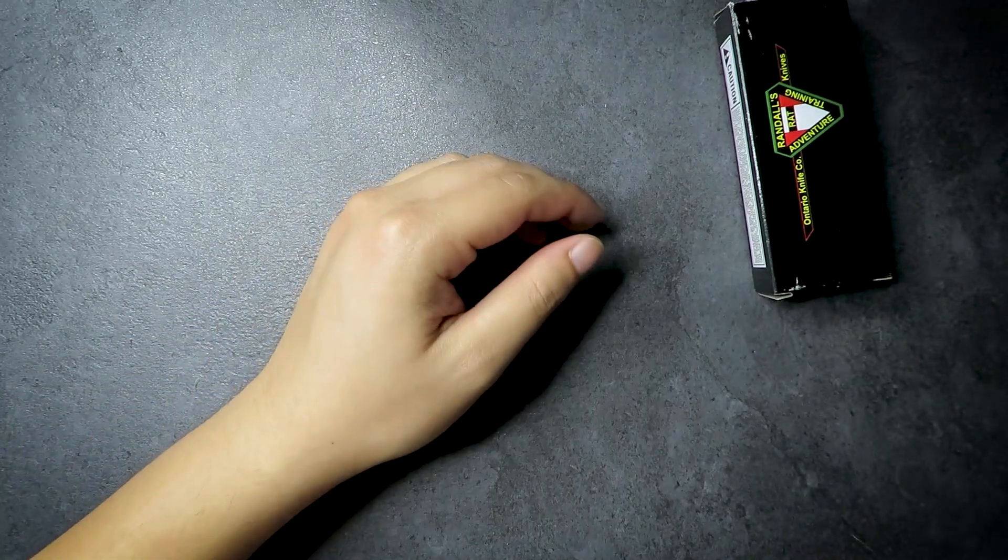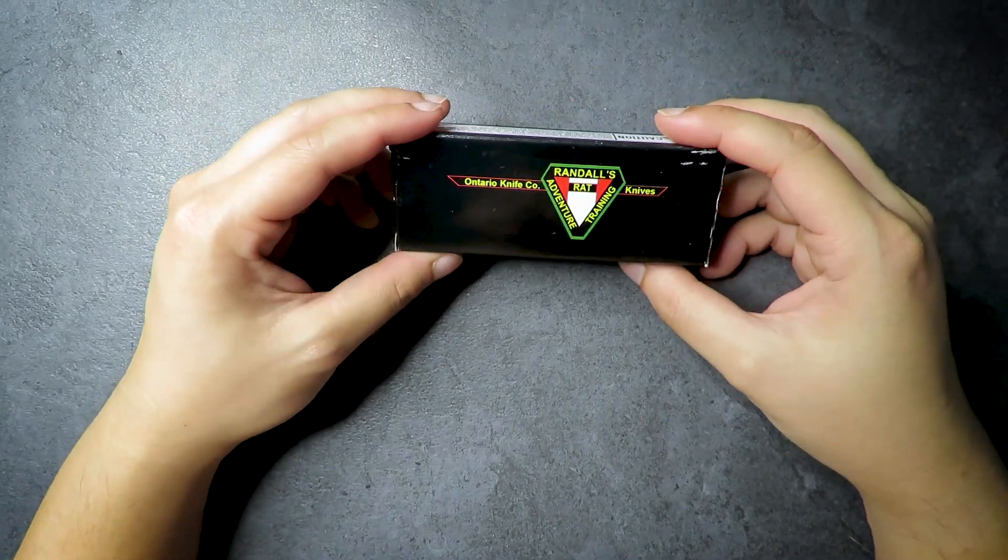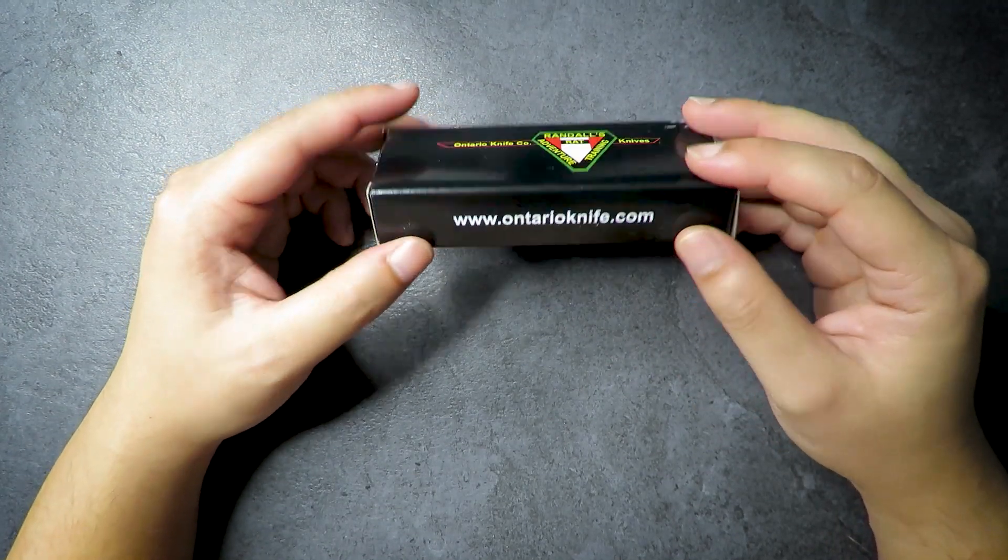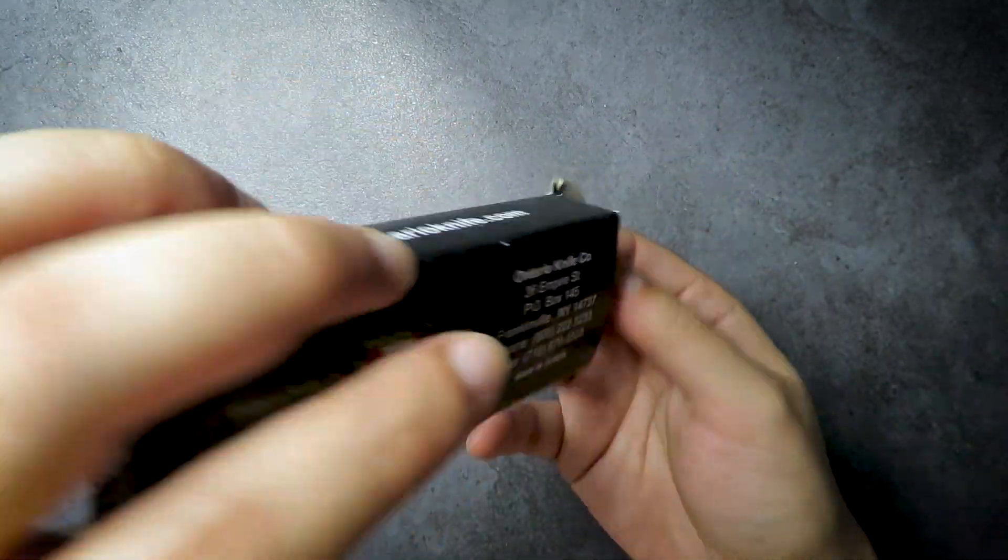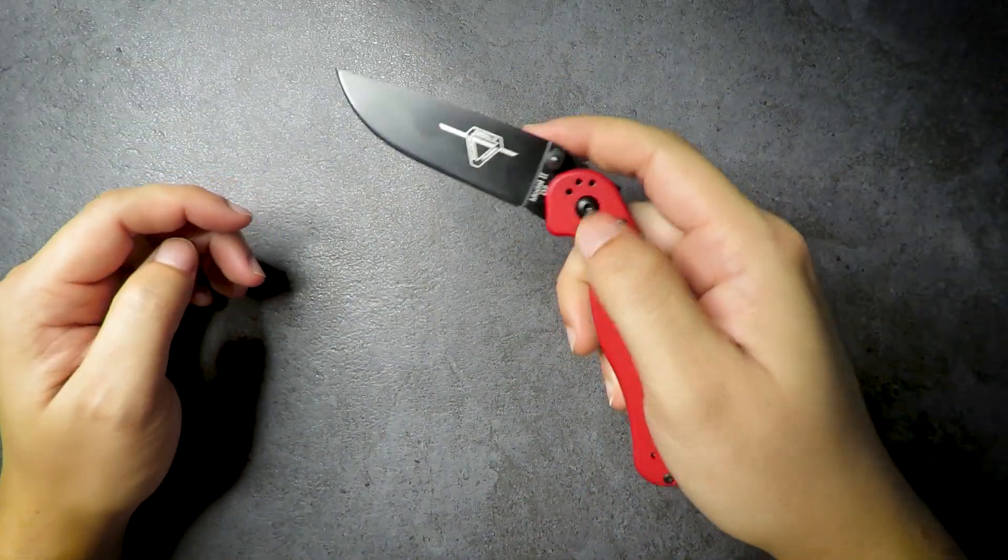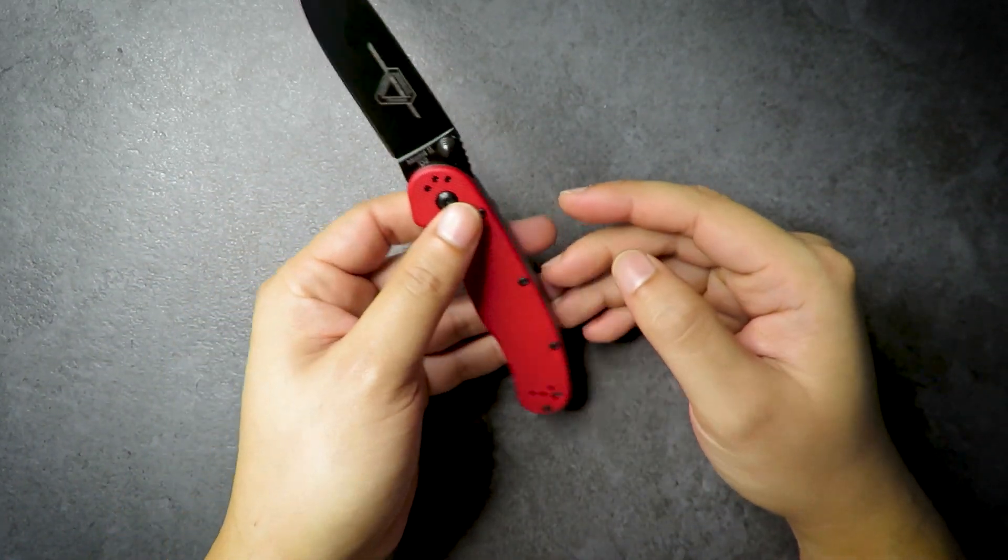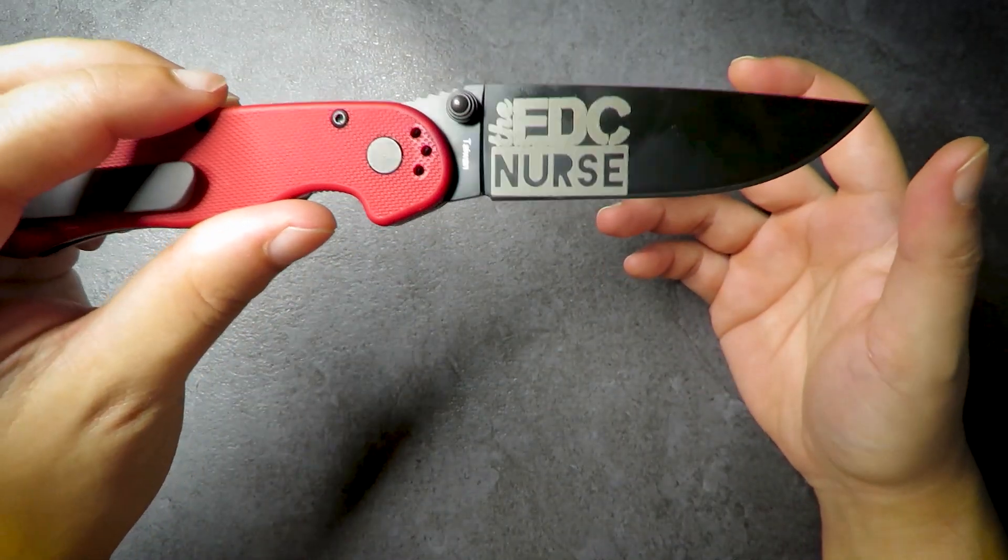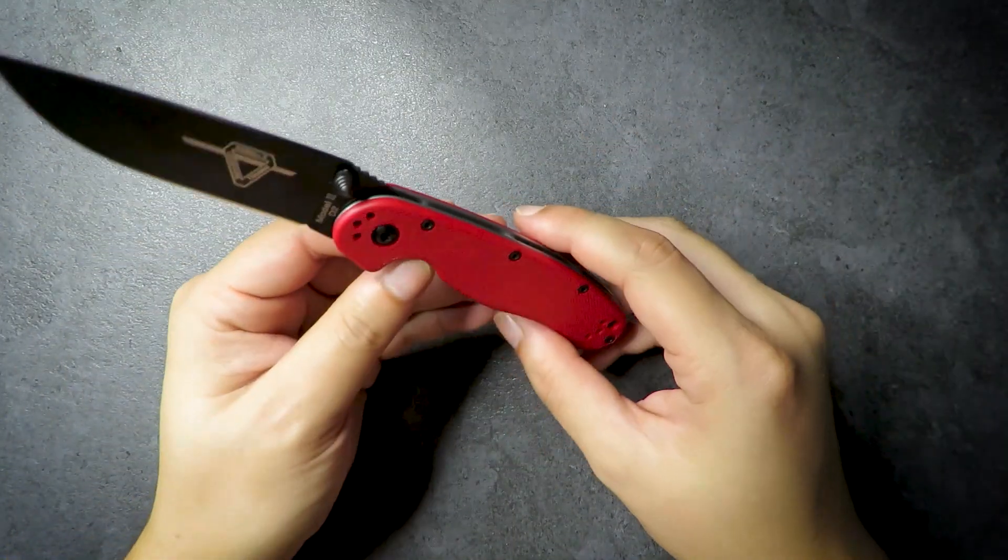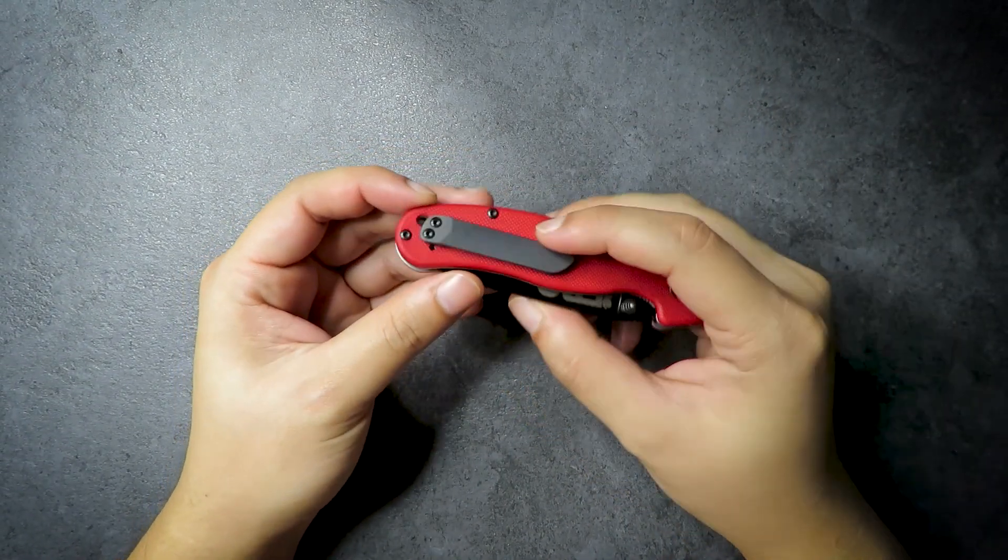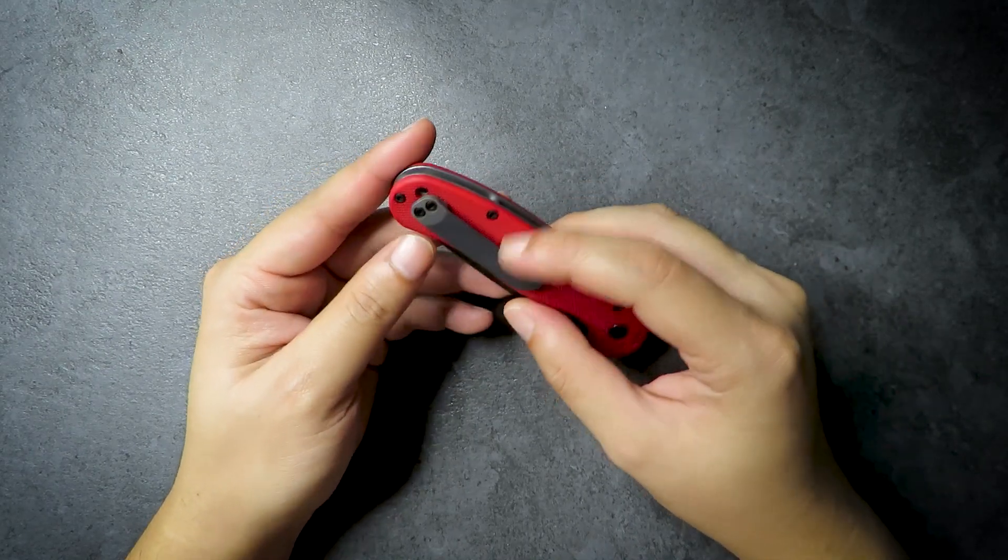Last but not least, we have the knife. We have here an Ontario Adventure Training Knife. An Ontario knife. This is, I believe, a Rat 2, and it's not your average Rat 2. It is with red G10. We have here a black coated blade in D2, but we also have this. This is the EDC nurse logo right there. So this is his logo. Do check him out on Instagram. He provided all these things in that giveaway. So thank you very much, bro. And we also have a second, not secondary, an aftermarket clip.